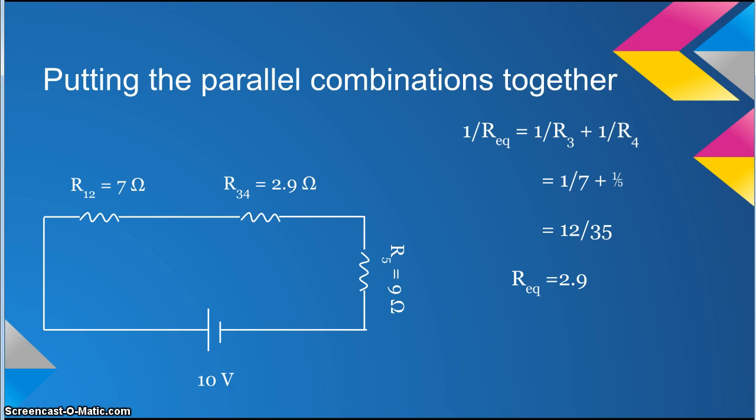To combine the resistors for a parallel circuit, you have to follow the equation 1 over REQ equals 1 over R3 plus 1 over R4. So 1 over 7 plus 1 over 5 equals 12 over 35. 12 over 35 equals 1 over REQ, but you are looking for R. So you will have to flip the answer to 35 over 12, which equals 2.9.